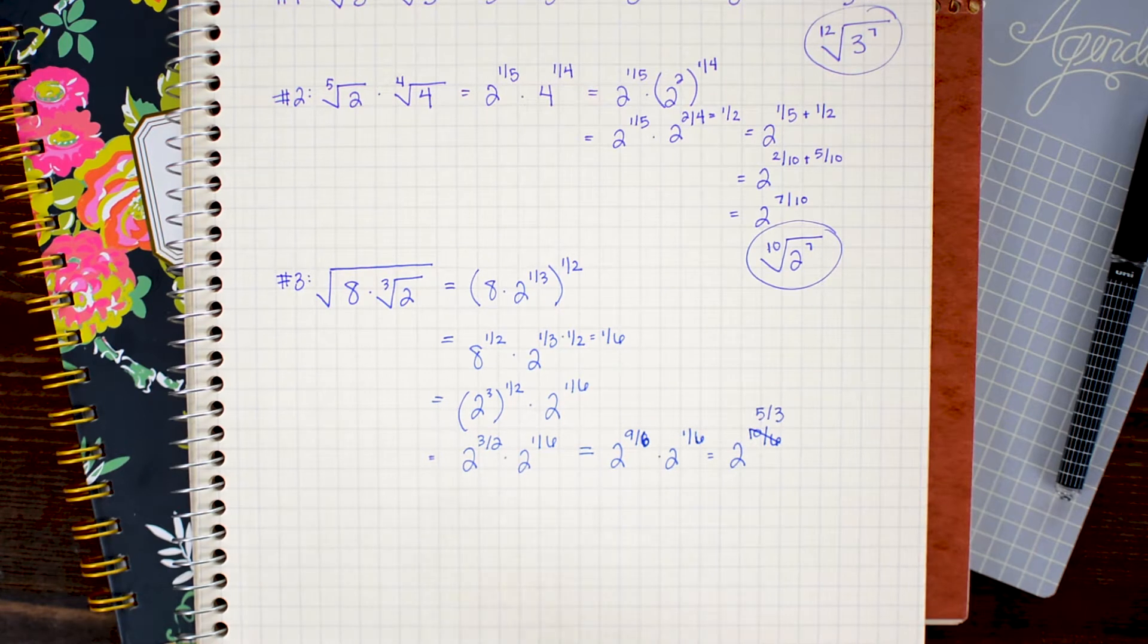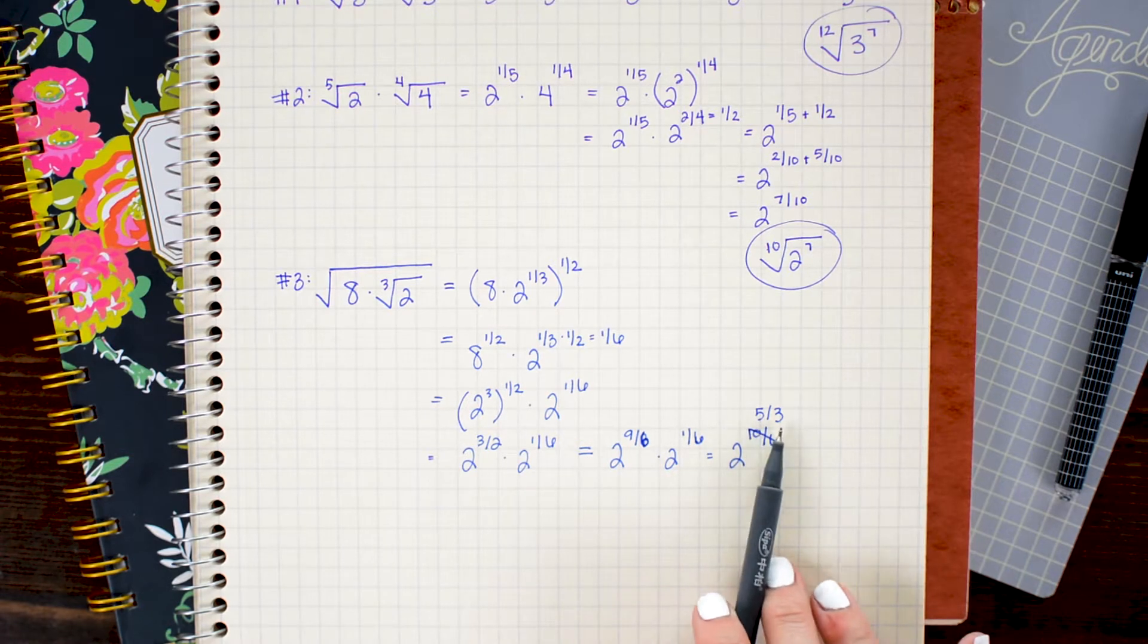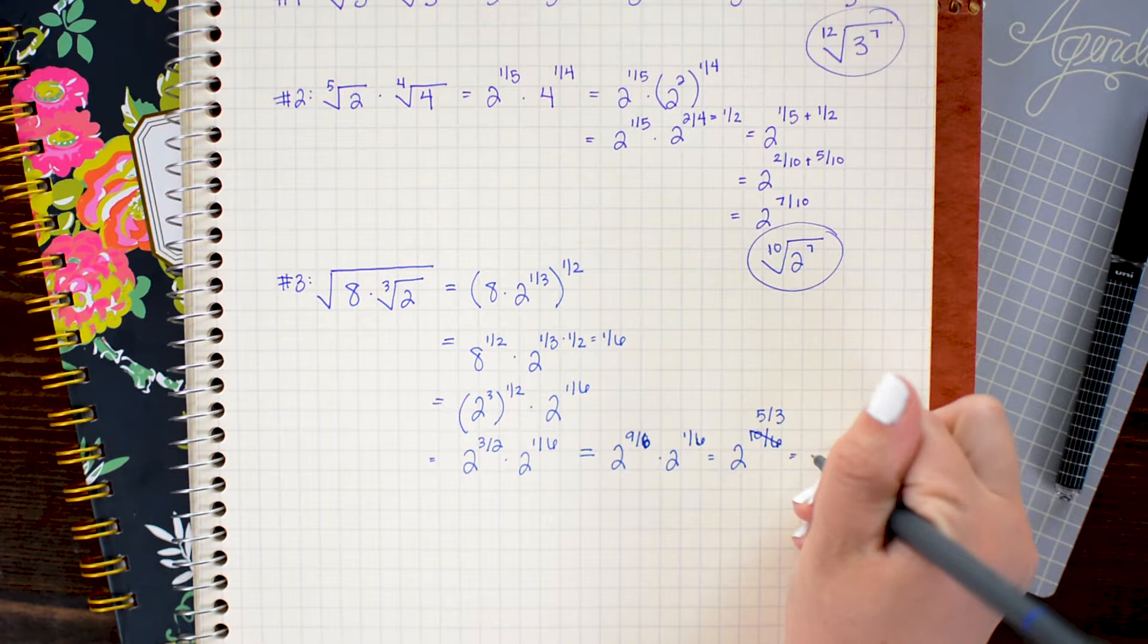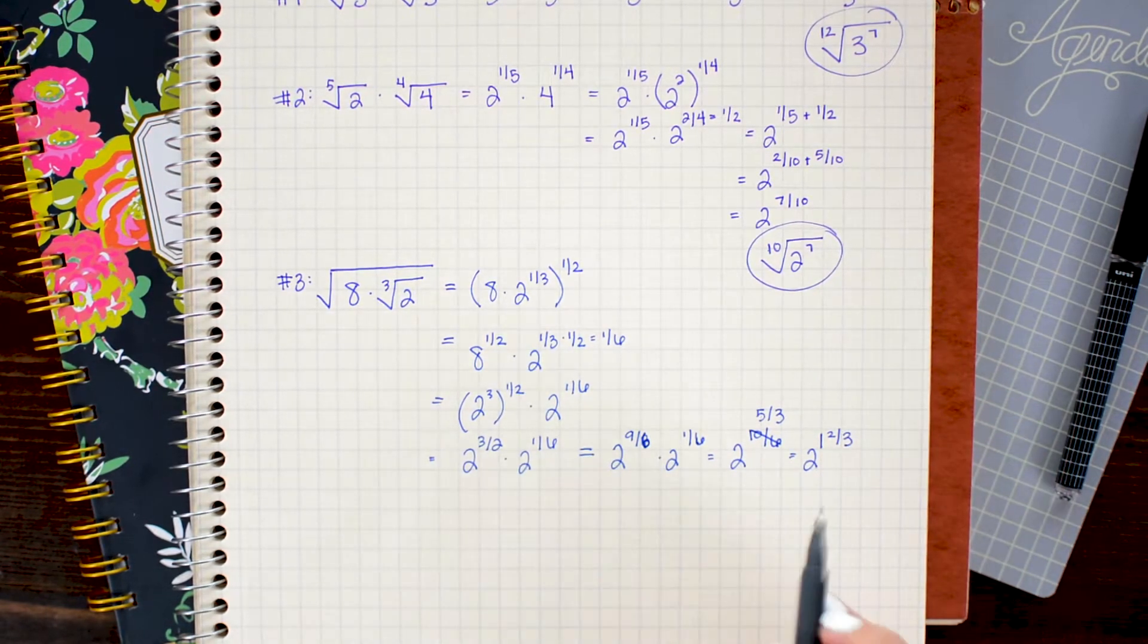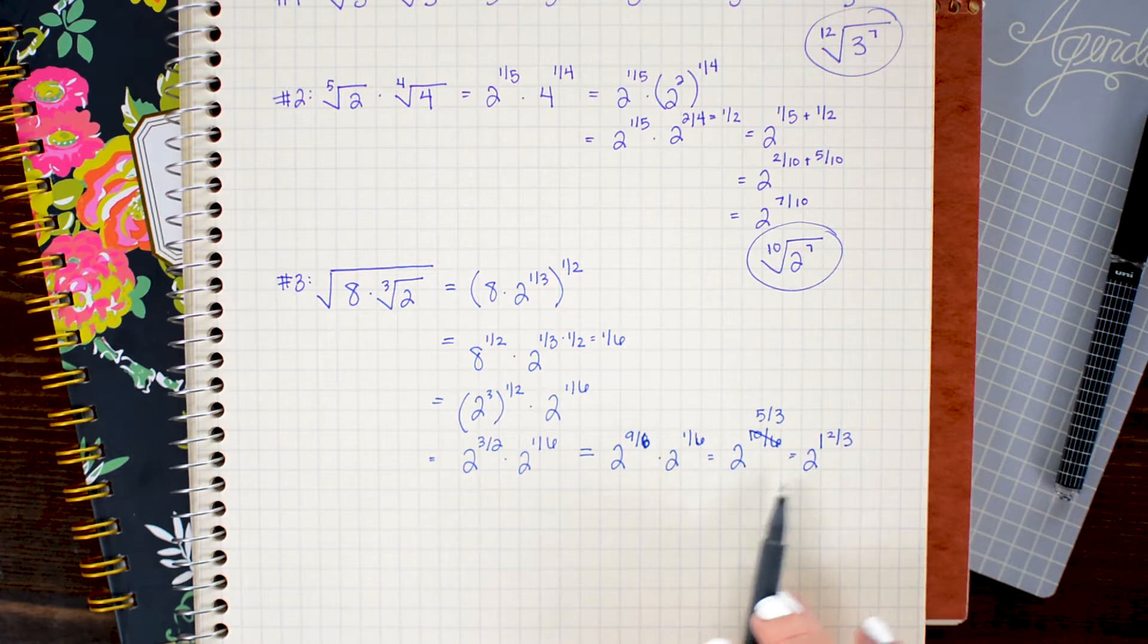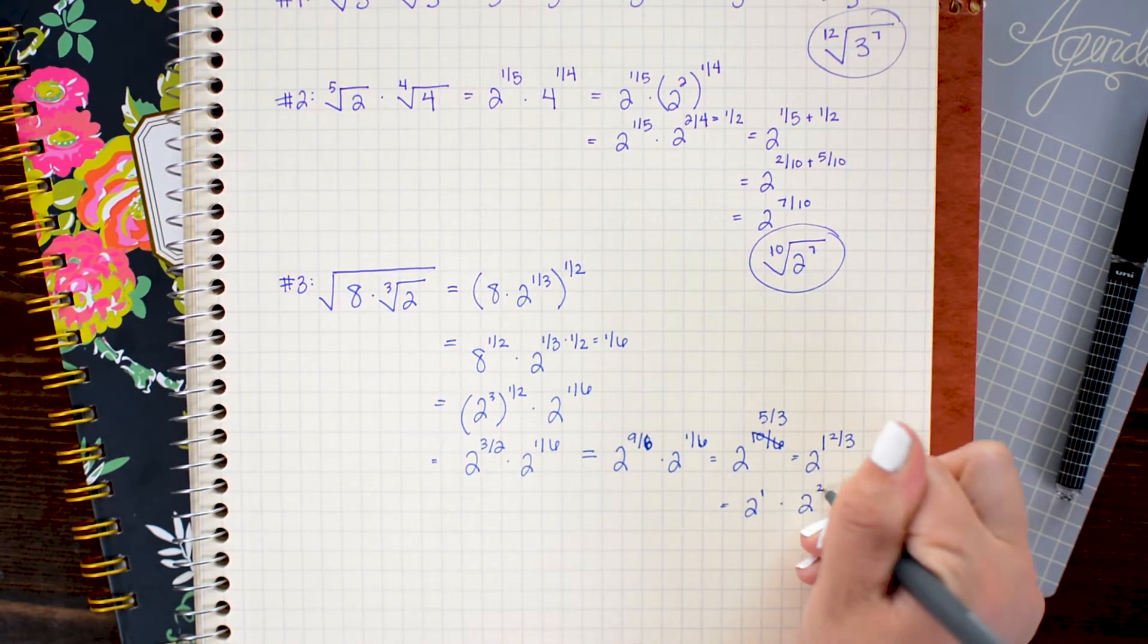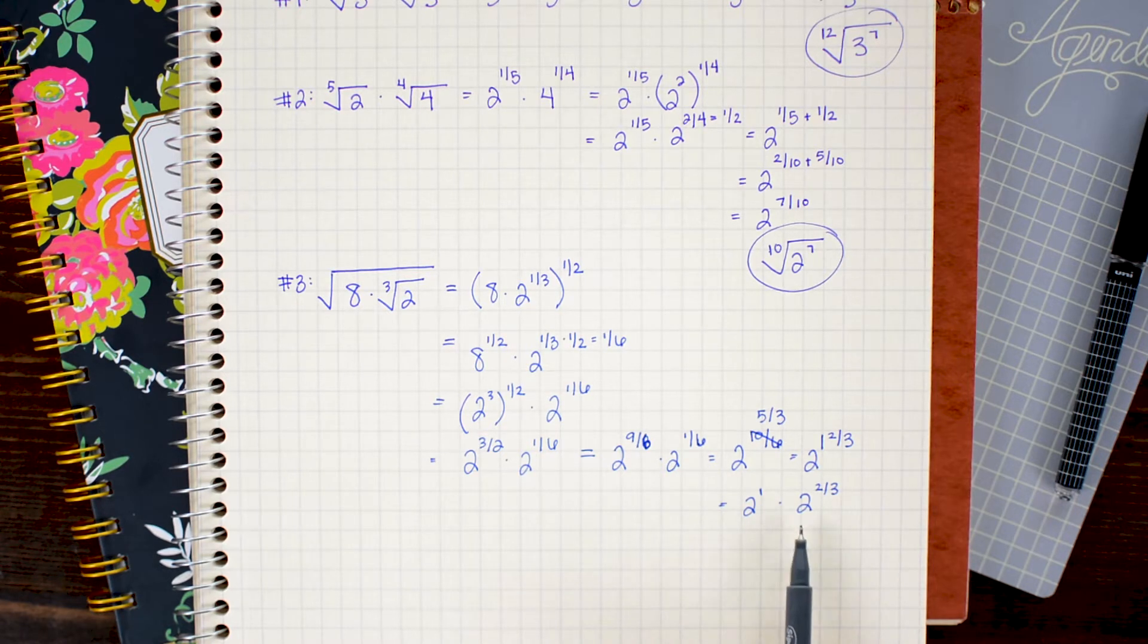And then the last step here is just to do a little bit of simplification. The way I like to handle this type of problem is to go ahead and take the improper fraction and rewrite it as a mixed number. So this becomes 2 to the 1 and 2/3. And then I can go ahead and split this up into two separate bases.